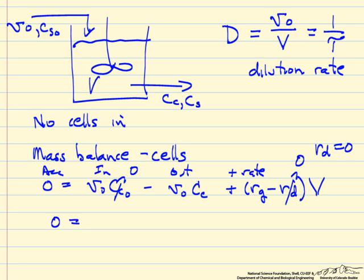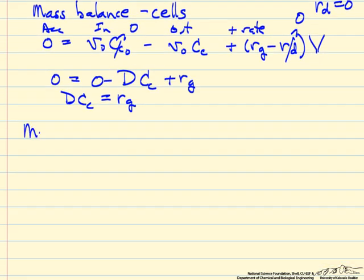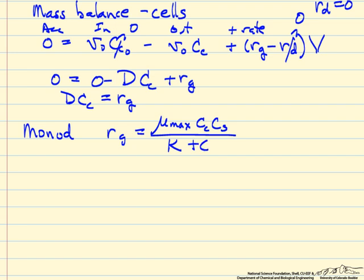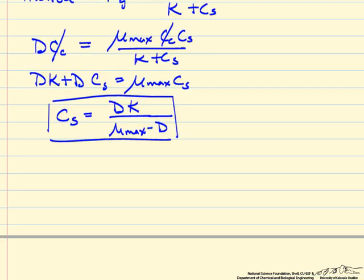If we rearrange this equation and use the definition of dilution rate — dividing through by the reactor volume — it simplifies to: the dilution rate D times the cell concentration at the exit equals the rate of generation per volume. We're going to use a rate expression of the fairly common Monod form: a rate constant times the concentration of cells times the concentration of substrate, divided by another constant plus the concentration of substrate. When we substitute this rate into the expression, the cell concentration on both sides cancels, and we can solve for the concentration of the substrate leaving the reactor.